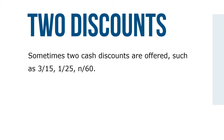Sometimes two cash discounts are offered, such as 3/15, 1/25, and N/60. This means a 3% cash discount is offered if the invoice is paid within 15 days, a 1% discount if the invoice is paid within 25 days, and the net amount is due in 60 days.